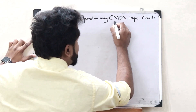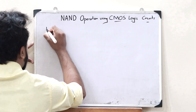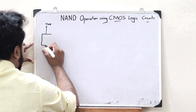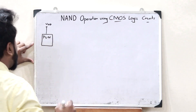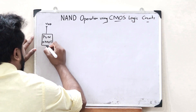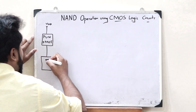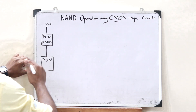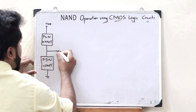We know for a fact that every CMOS logic circuit has got two parts. First, we have the VDD connected to a bunch of transistors called the pull-up network. This pull-up network is made up of PMOS transistors. This is then connected to another set of transistors called the pull-down network, which consists of NMOS transistors. This in turn is connected to ground, and here is where we take the output.